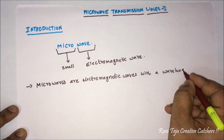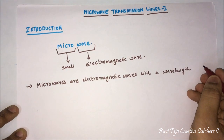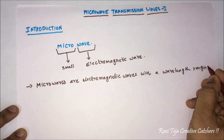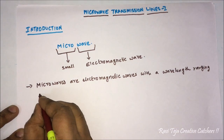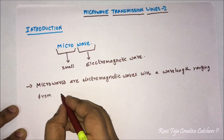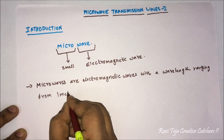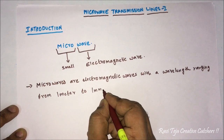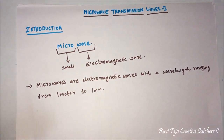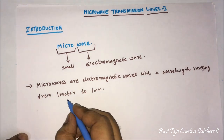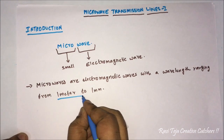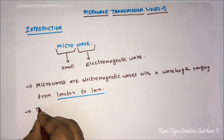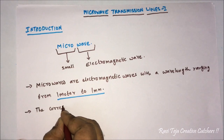Each signal will have its own length, so microwaves have a wavelength ranging from 1 meter to 1 millimeter. This is the wavelength range you need to remember: 1 meter to 1 millimeter.